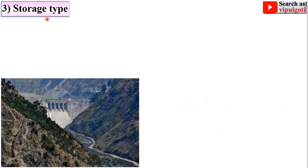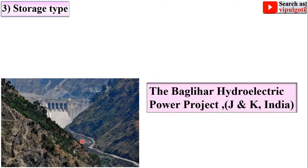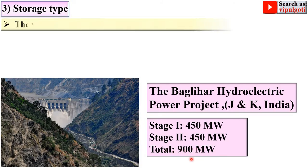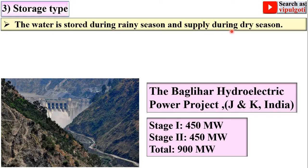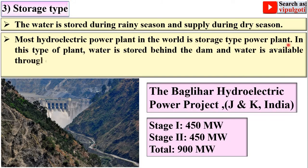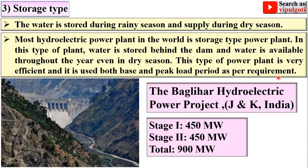Next is the storage type, where a large dam is constructed across the river — for example, the Baglihar hydroelectric power project in Jammu and Kashmir, India, with a total capacity of 900 megawatts. Water is stored during the rainy season and supplied during the dry season. Most hydroelectric power plants in the world are storage type. Water is stored behind the dam and is available throughout the year, even in dry season. This type is very efficient and can be used for both base and peak load periods as required.